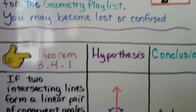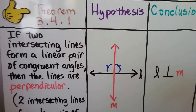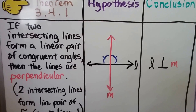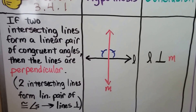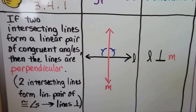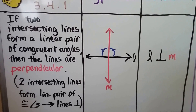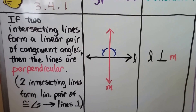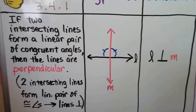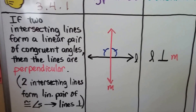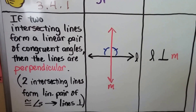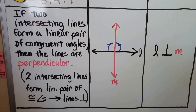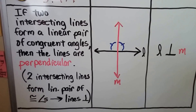Here's our first theorem, 3.4.1. That means we're in chapter 3, lesson 4, and it's the first theorem. If two intersecting lines form a linear pair of congruent angles, then the lines are perpendicular. We can see line L and line M are intersecting, and they form a linear pair of congruent angles. That means that line L is perpendicular to line M.